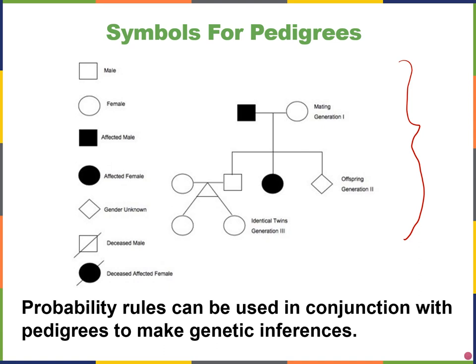There are a few rules to know. Males are usually depicted using a square. If I see a square, that's a male. If it's shaded in, that tells you that individual is affected. A circle is a female, and a shaded circle is an affected female showing the particular trait of interest.